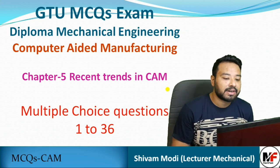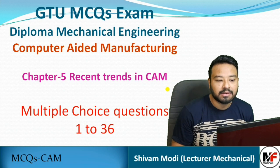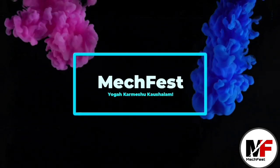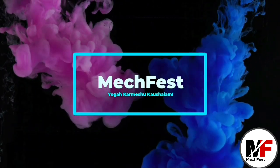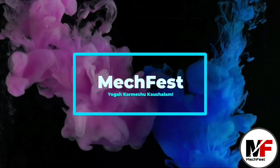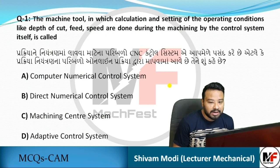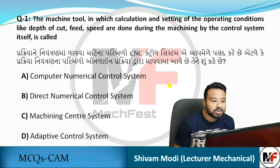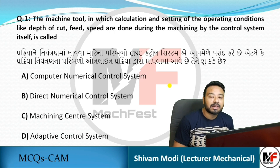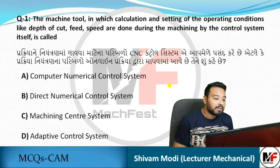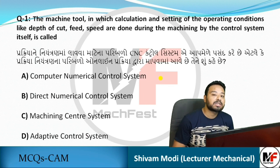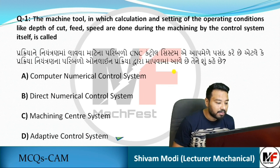Today we are going to discuss chapter number five: Recent Trends in CAM. The first question is: the machine tool in which calculation and setting of operating conditions like depth of cut, feed, and speed are done during machining by the control system itself is called — the answer is the adaptive control system.